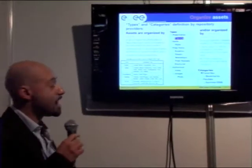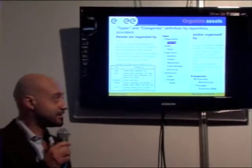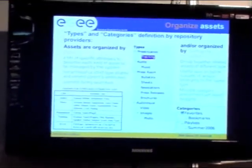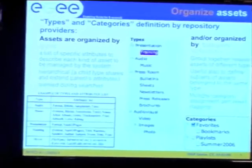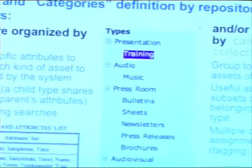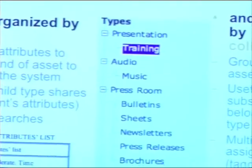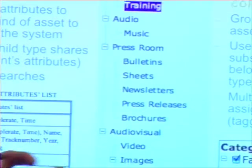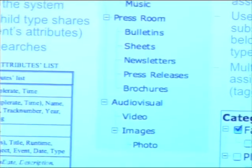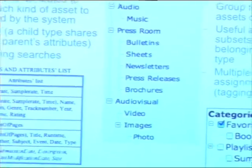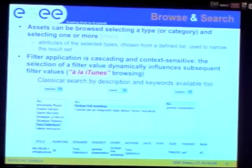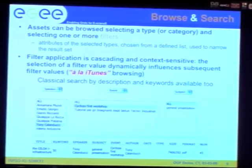G Library allows you to organize your assets by type and by category. Each administrator of a library defines the types they want to manage, creating a type tree. The browsing system is modeled on the iTunes software.